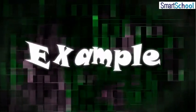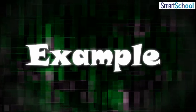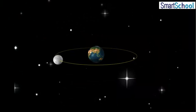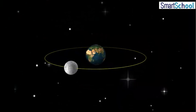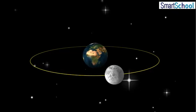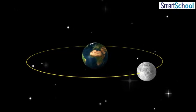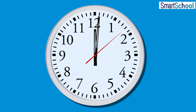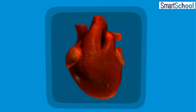Let us take some examples of periodic motion. Motion of the moon around the earth is a periodic motion as it repeats itself after a fixed interval of time. Motion of the hands of a clock is also a periodic motion as it repeats itself after a fixed interval of time. The heartbeats in our body also represent a periodic motion as they repeat themselves after a fixed interval of time.